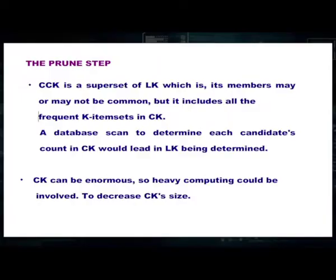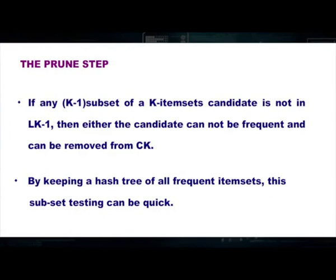In the prune step, Ck is a superset of Lk — its members may or may not be frequent, but it includes all frequent k-item sets. A database scan determines each candidate's count in Ck to produce Lk. Since Ck can be enormous, heavy computing may be involved, so we need to decrease its size. If any k−1 subset of a k-item set candidate is not in Lk−1, then the candidate cannot be frequent and can be removed from Ck. Keeping a hash tree of all frequent item sets makes this subset testing quick.